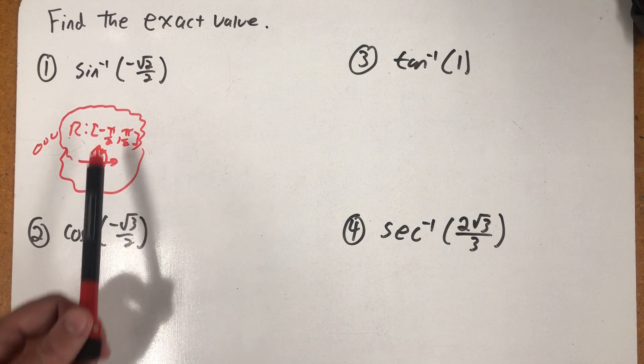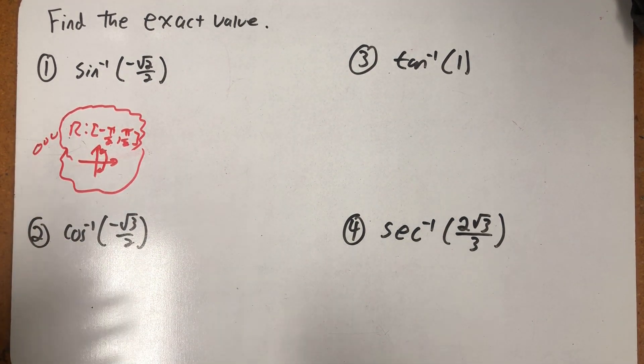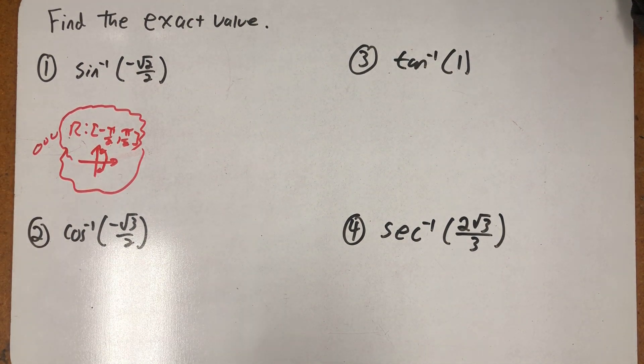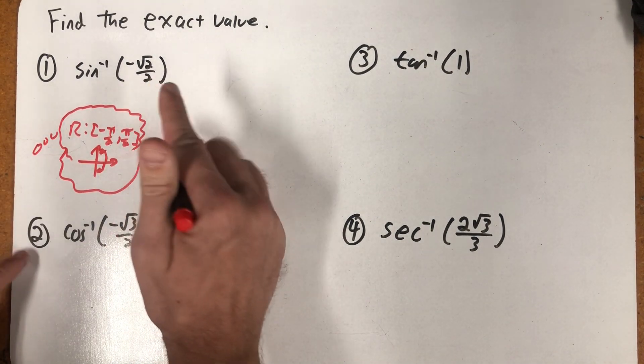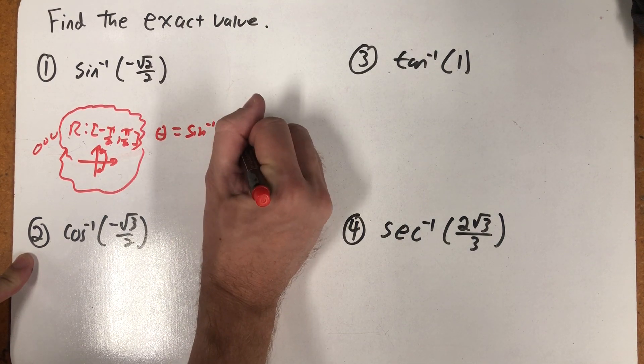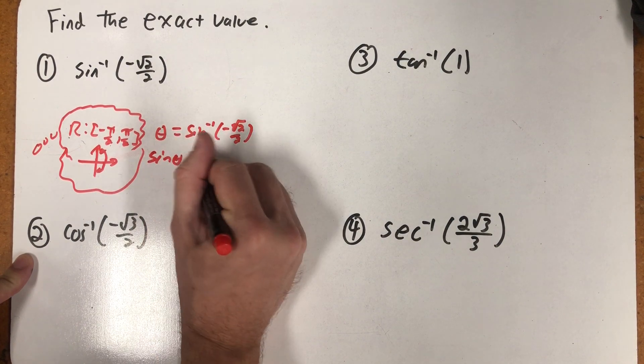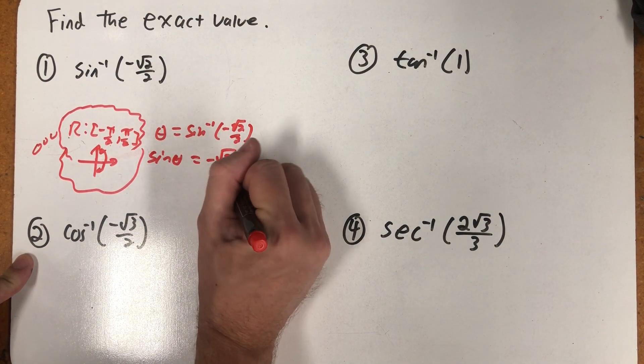Sine's negative in quadrant four, so this inverse sine of a negative number should be one of those quadrant four angles. Because the other thing I can always secretly think about is that here I'm dealing with an angle, and I'm really looking for the angle where the sine of theta is equal to minus root two over two.